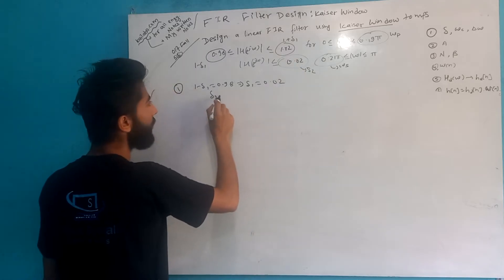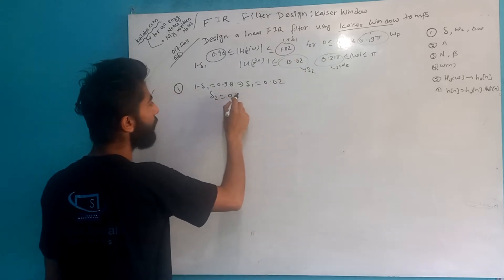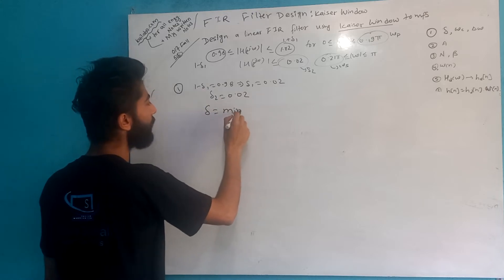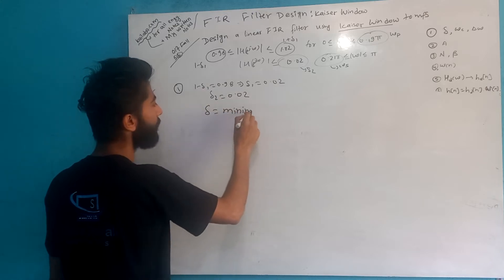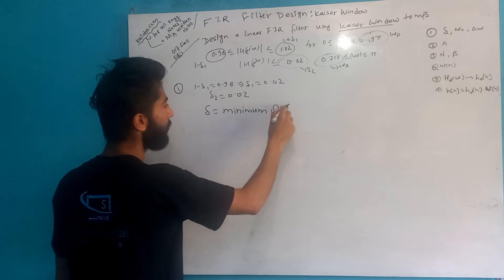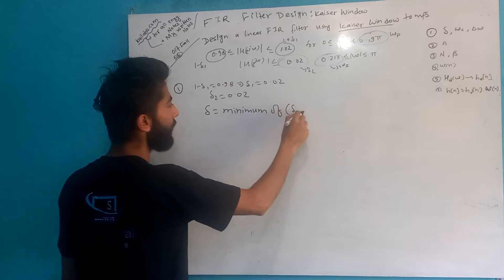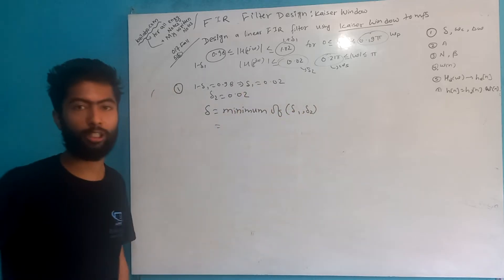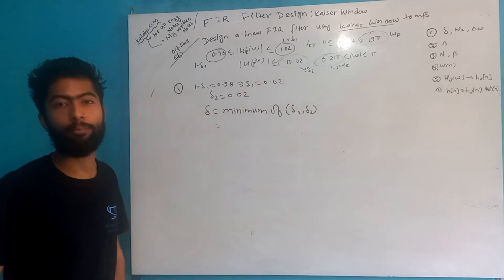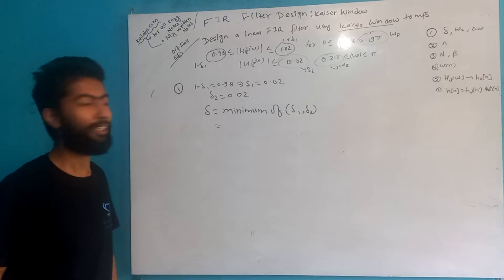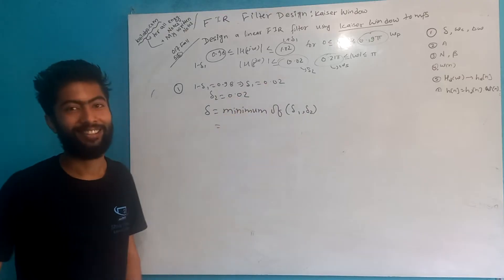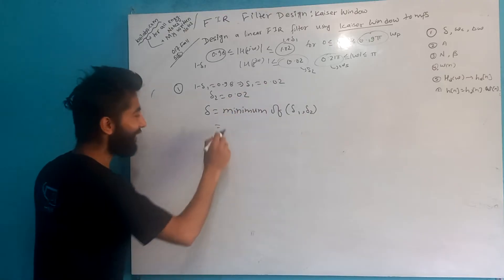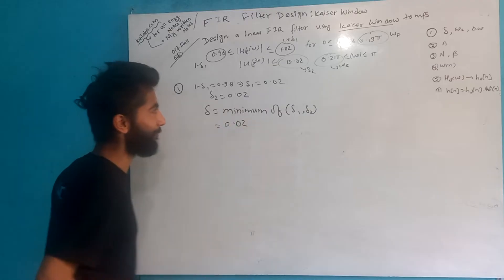Delta_2 is equal to 0.02. Delta equals the minimum of delta_1 and delta_2. So we take the minimum of these two values, which gives delta = 0.02.